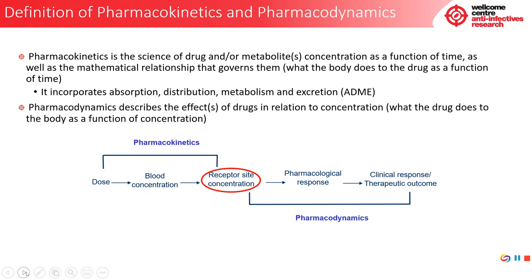Pharmacokinetics is the science of drug and/or metabolite concentration as a function of time, as well as the mathematical relationships that govern them. It can be simply put as what the body does to the drug as a function of time. It incorporates absorption, distribution, metabolism, and excretion — giving rise to the acronym ADME — and when toxicology is added, the acronym becomes ADMET.